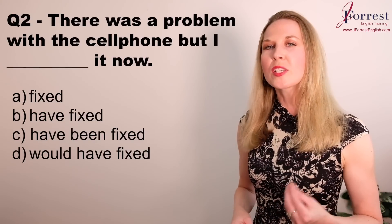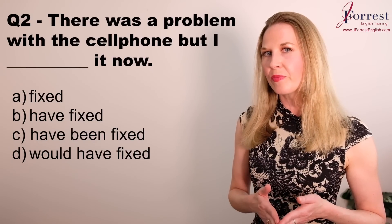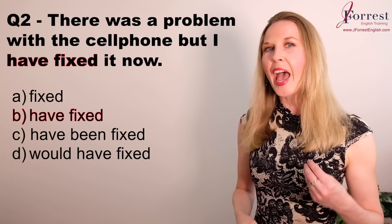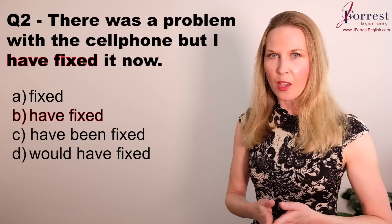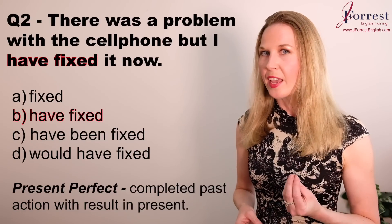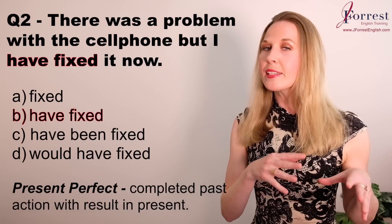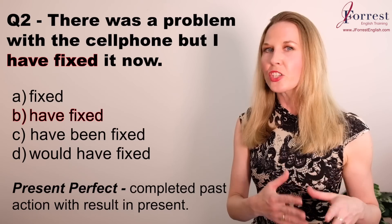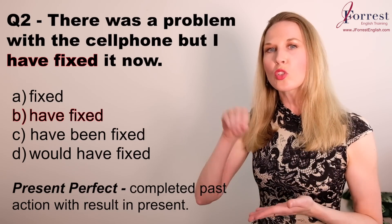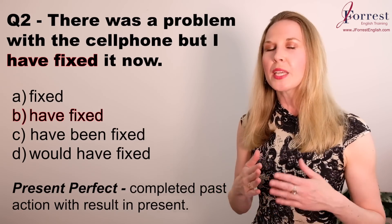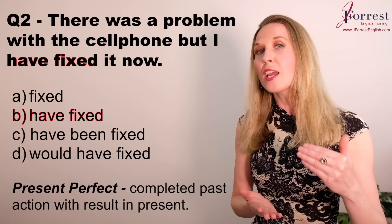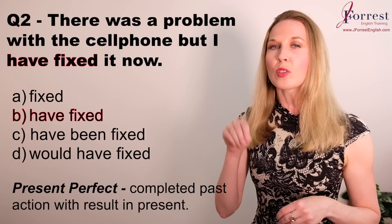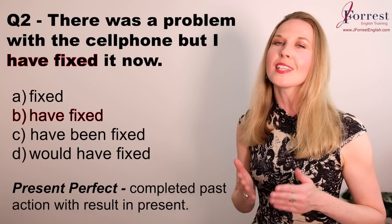Question two: there was a problem with the cell phone, but I __ it now. The answer is 'have fixed it now.' We need the present perfect verb tense because we're talking about a past action that's complete — the cell phone is fixed right now. The action is complete, but there's a result in the present, indicated by the keyword 'now.'